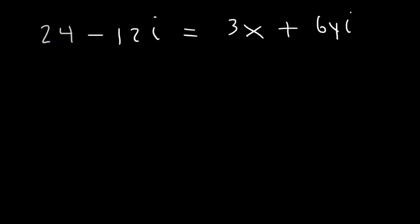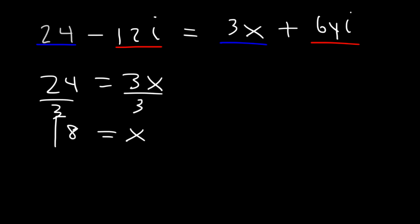So we can set 24 equal to 3x and negative 12i equal to 6yi. So if 24 is equal to 3x, then x is equal to 24 divided by 3, which is 8.